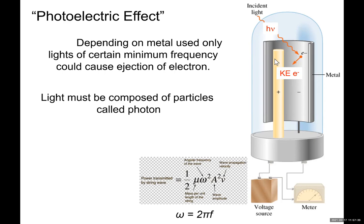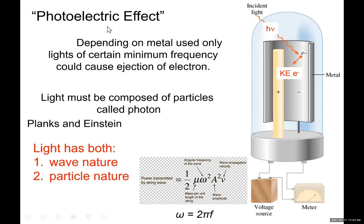So Planck and Einstein, in order to explain these phenomena of photoelectric effect, they say light is composed of particles, particles of energy, and we call that photon. At the same time, as I showed you in previous videos, light is still showing interference. Interference is a property of waves. So they say we have to accept both phenomena. Some behavior, some observations of light are explained by particle property, like here, and interference of the light is explained by light being waves.